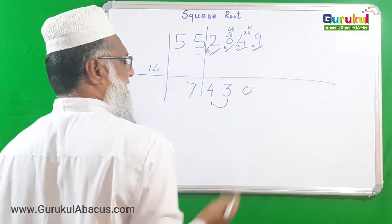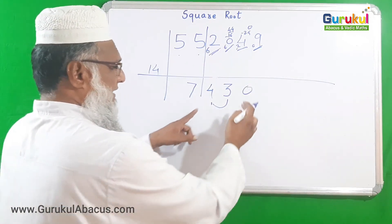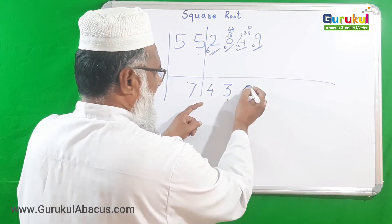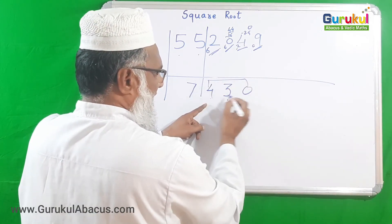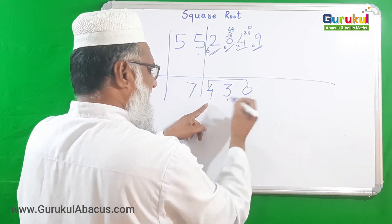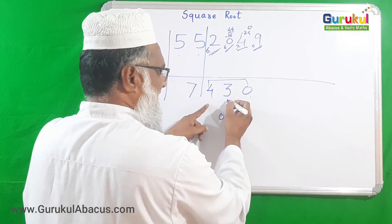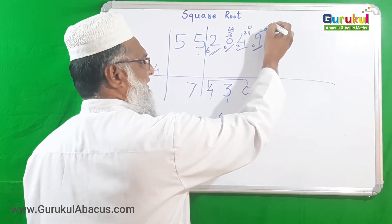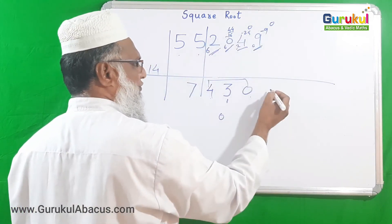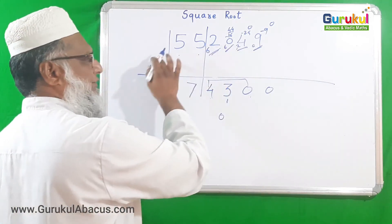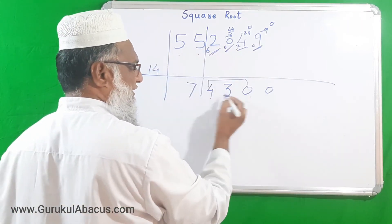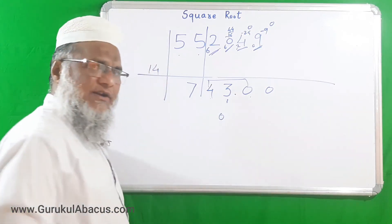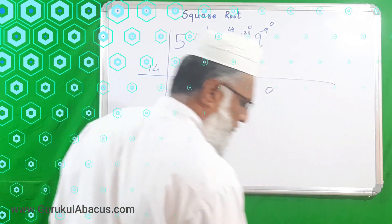Now we have 09, and we subtract the dvandva of all three digits 4, 3, and 0: first and last product 4 × 0 doubled is 0, middle digit squared 3 × 3 = 9, total is 9. Subtracting 9 from 9 gives 0. So 14 × 0 = 0. We had three pairs so three digits: placing the decimal point, the answer is 743.